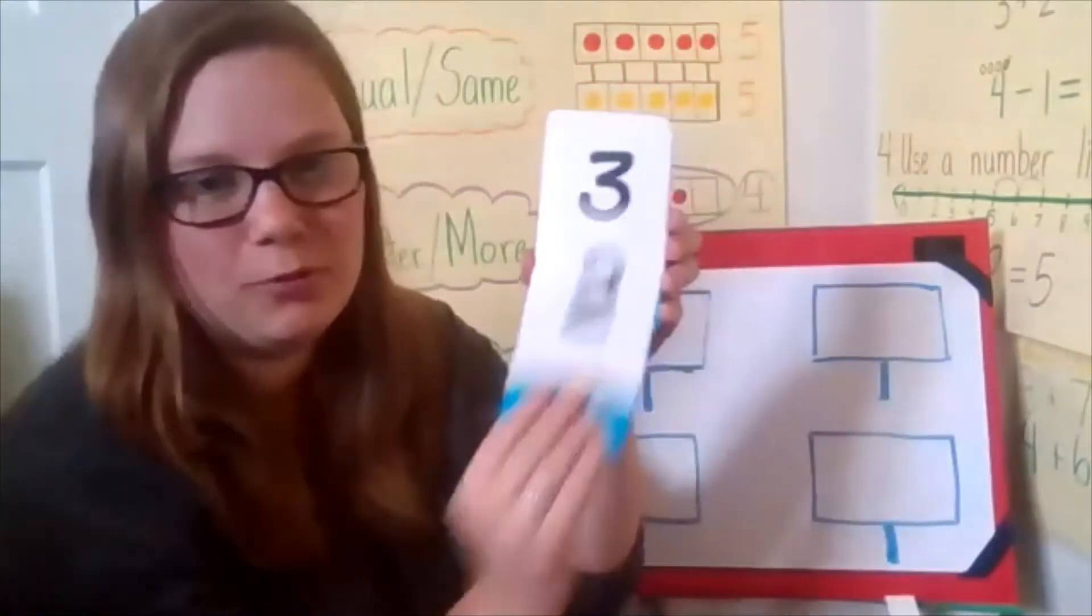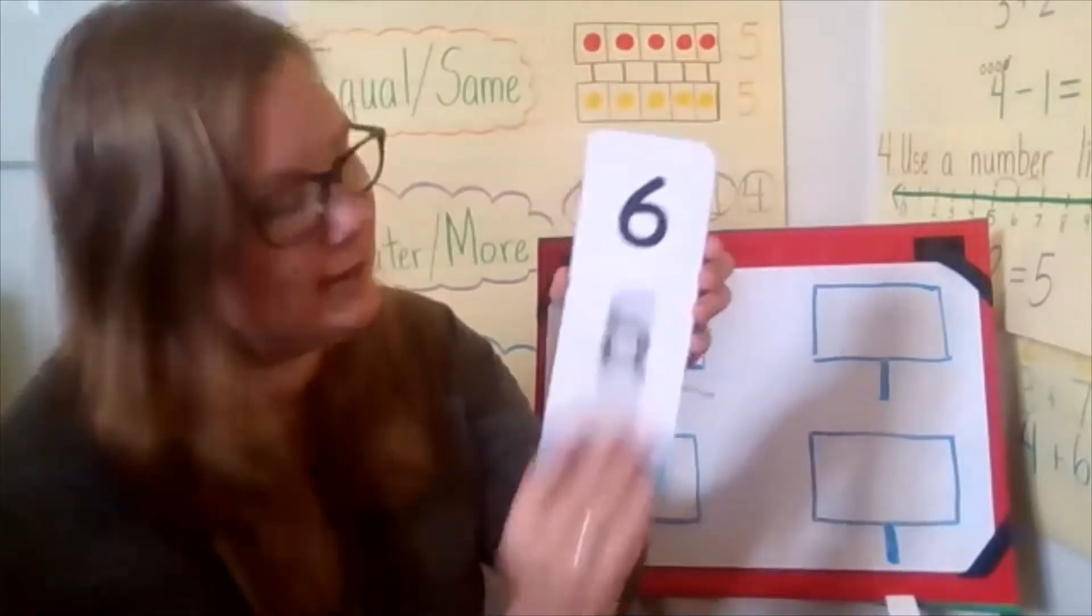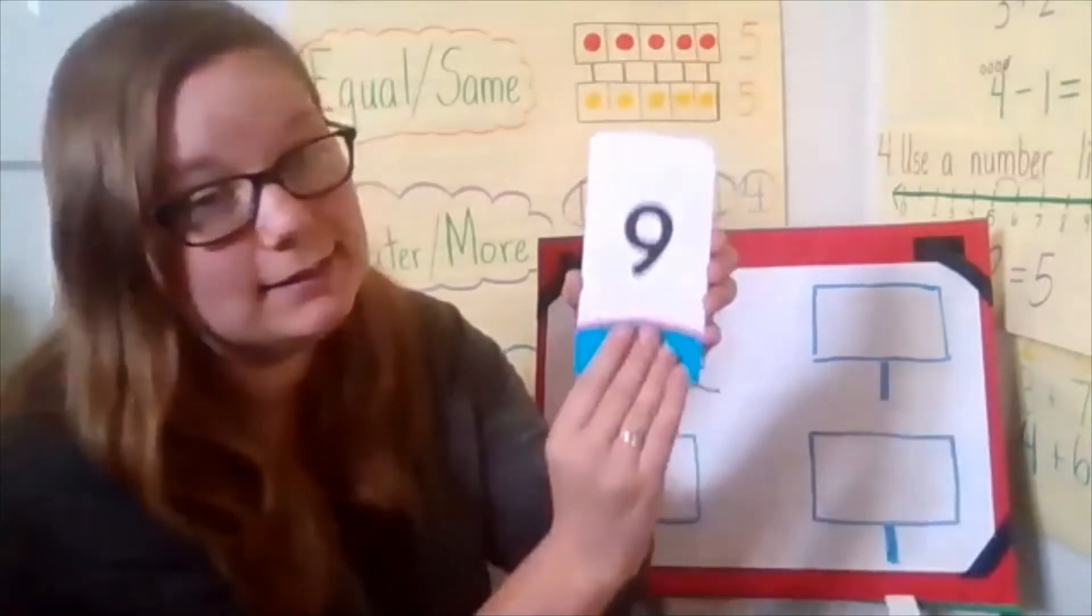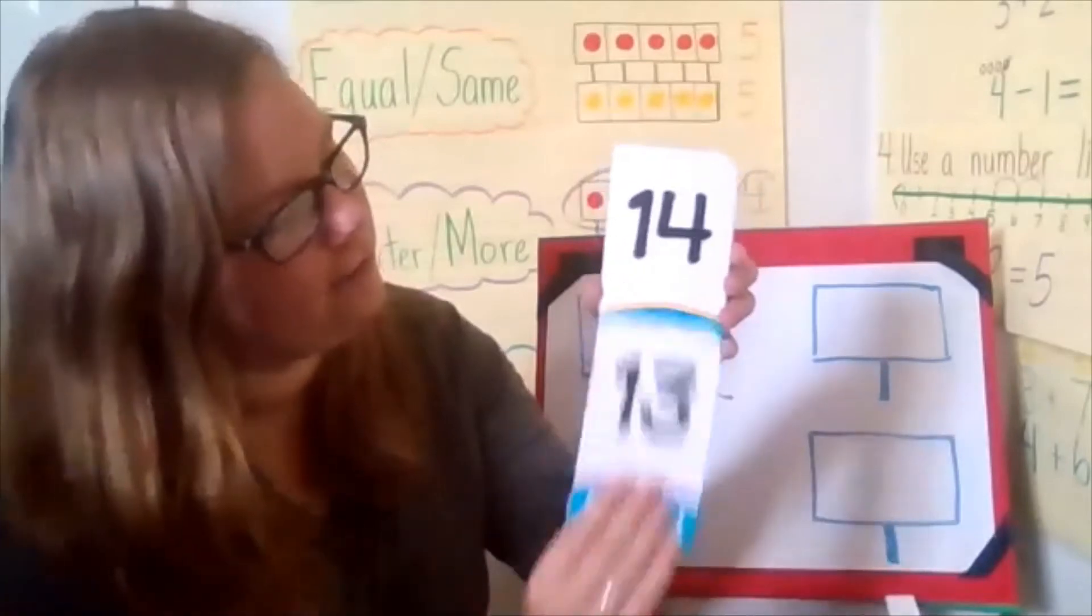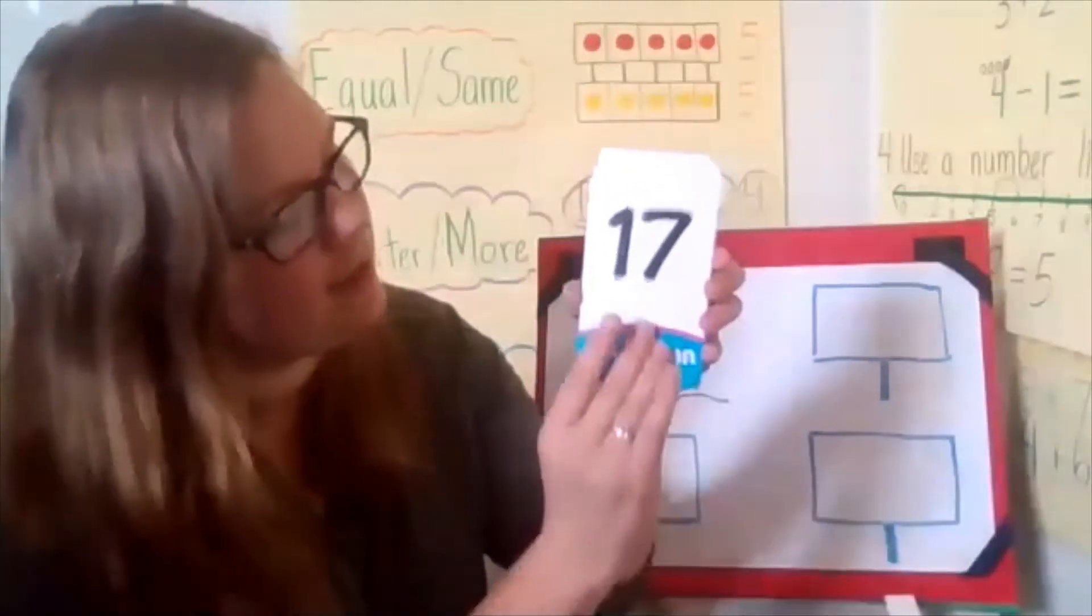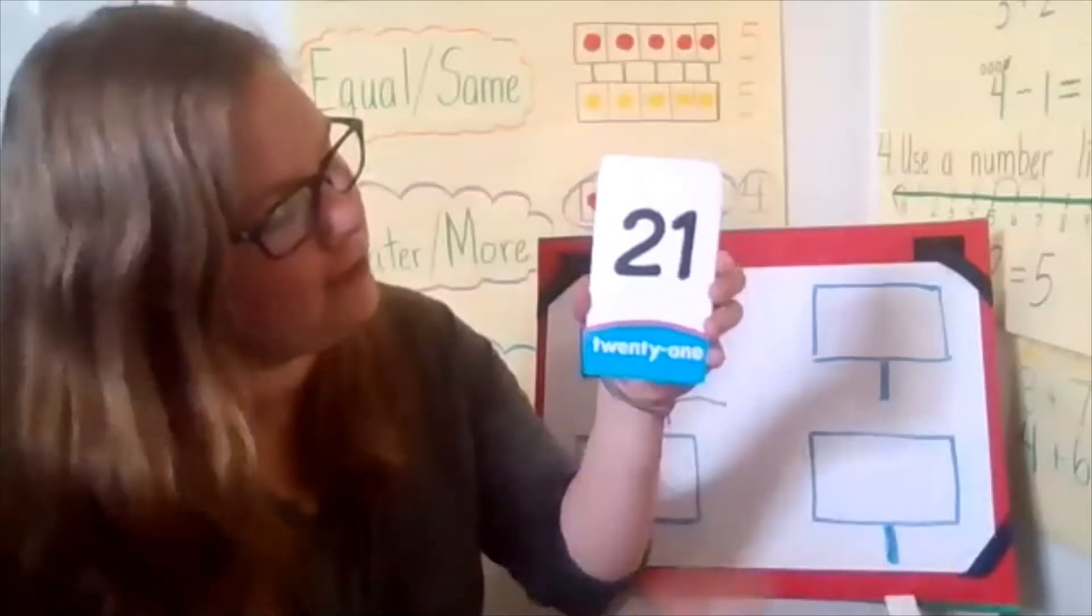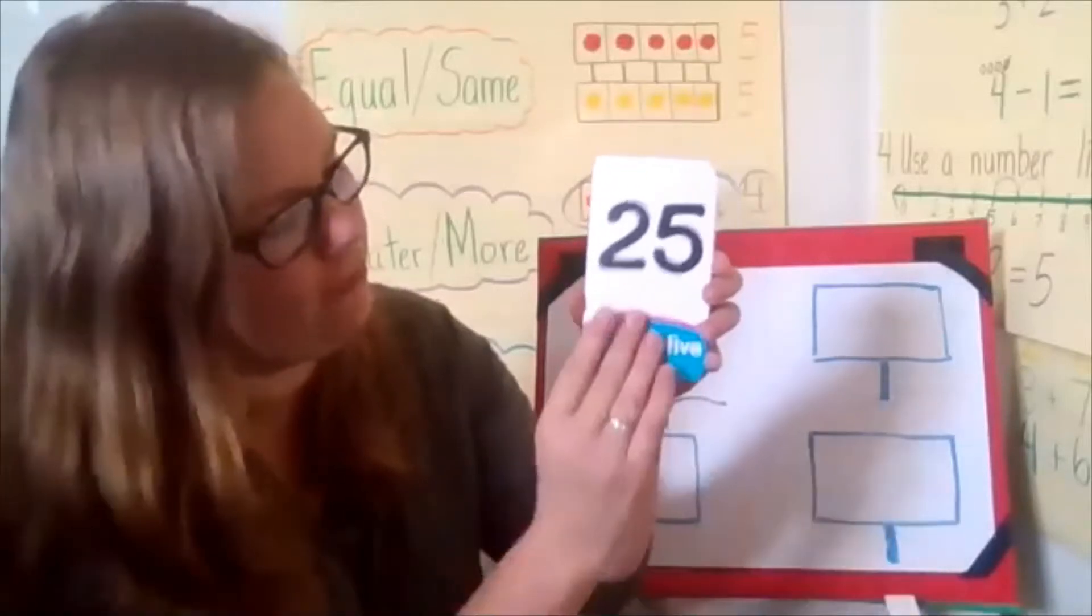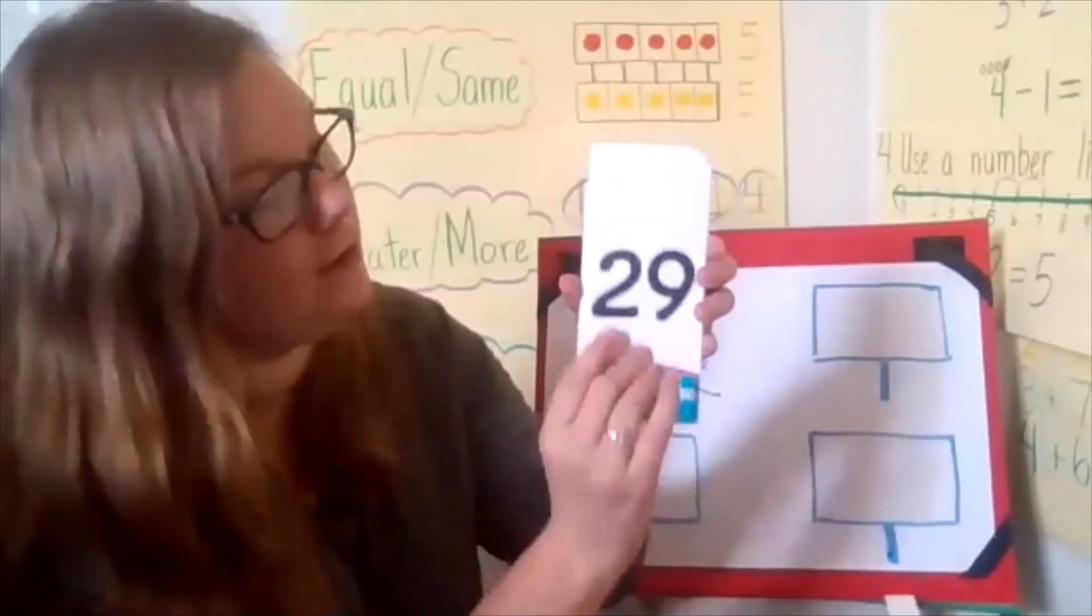One, two, three, four, five, six, seven, eight, nine, ten, eleven, twelve, thirteen, fourteen, fifteen, sixteen, seventeen, eighteen, nineteen, twenty, twenty-one, twenty-two, twenty-three, twenty-four, twenty-five, twenty-six, twenty-seven, twenty-eight, twenty-nine, thirty.